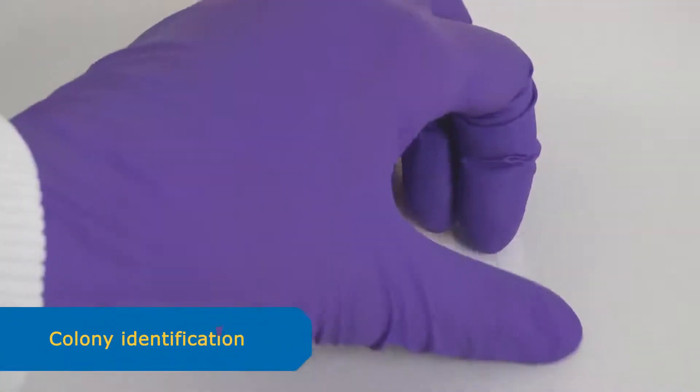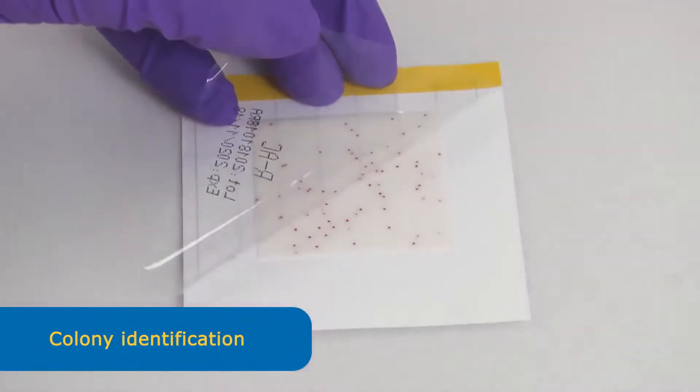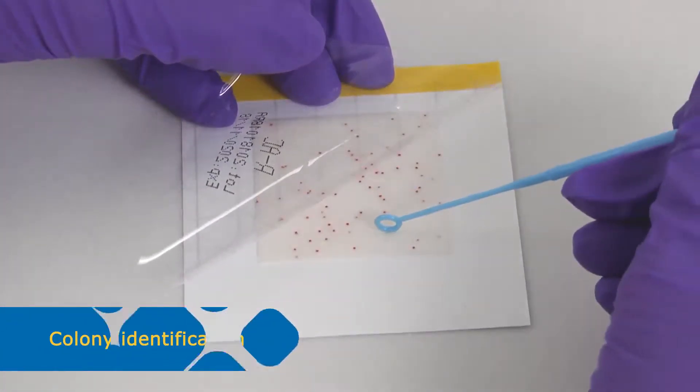For identification, you can pick up a colony using a sterile needle by scratching the pad. The pad will remain stained.